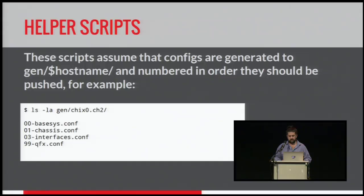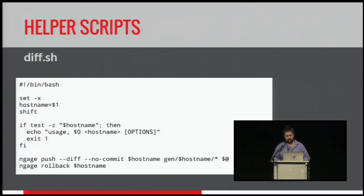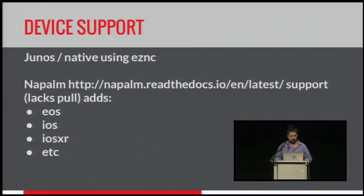I use this with Ansible — when you generate files, each snippet, as I call them, gets put into an output directory named with a host name. I've included a couple of scripts here as an example to see how I use it. These commands take the single host name and do whatever you tell it to. For device support, Junos supports everything; it's also been ported to Napalm, which supports 10 or 15 different OSes. Napalm does not support a pull config, so that will throw a not-implemented error, but for pushing it all works fine.